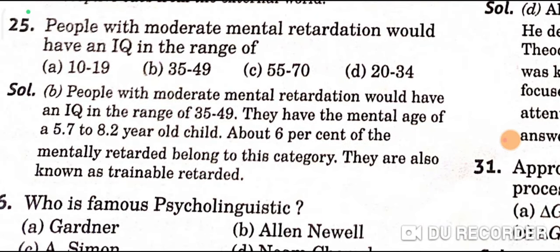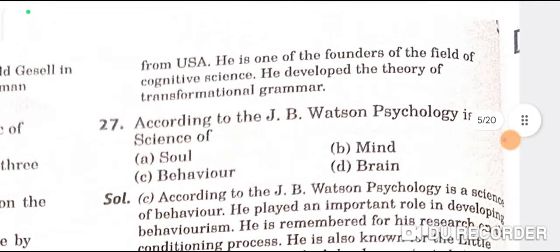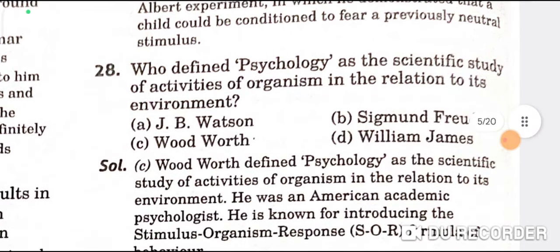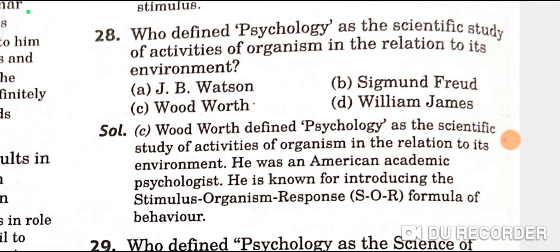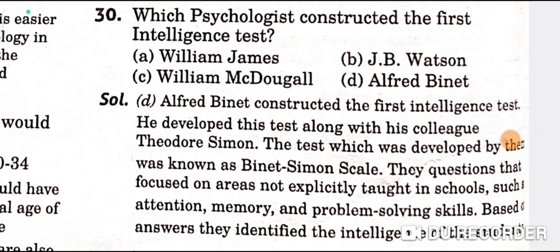People with moderate mental retardation have an IQ in the range of 35 to 49. The famous psycholinguist is Noam Chomsky. According to J.B. Watson, psychology is a science of behavior — C is the correct option. Woodworth defined psychology as the scientific study of activities of an organism in relation to its environment. E.B. Titchener defined psychology as a science of immediate experience with consciousness as the main subject matter. The first intelligence test was constructed by Binet — alpha D is the correct option. With this, the psychology section is over.